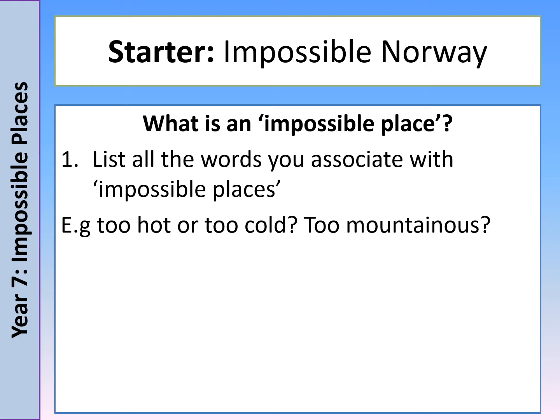We are going to be studying impossible places this half term. Every week you'll be studying a different place or different country that poses challenges for the people that live there. To start, I would like you to think about what an impossible place is. List all of the words you would associate with impossible places — maybe too hot, too cold, too mountainous, or too close to the sea and at risk of flooding. Think of everything you know about geography already and all of the different natural features you've studied.